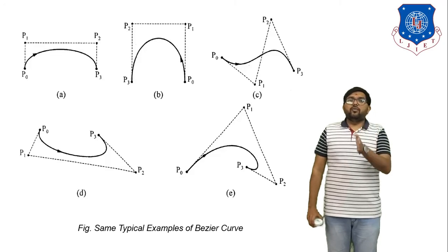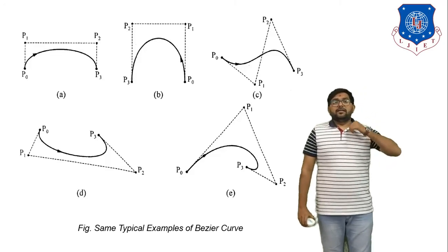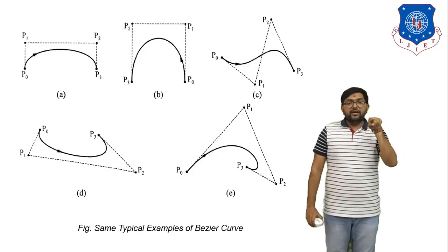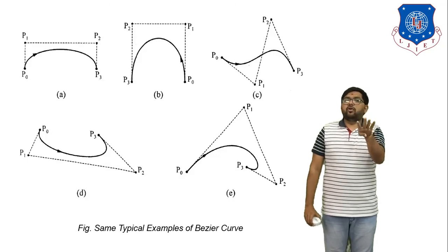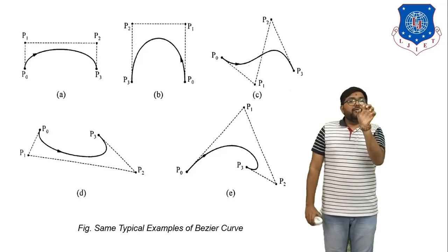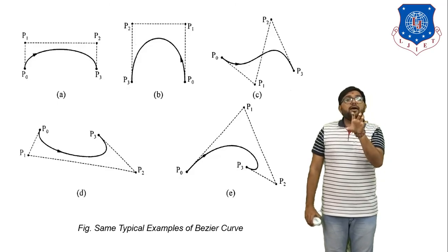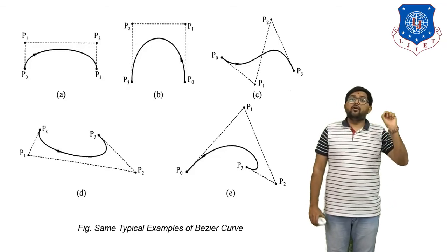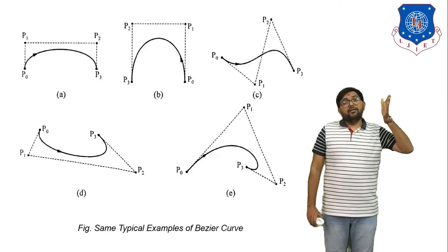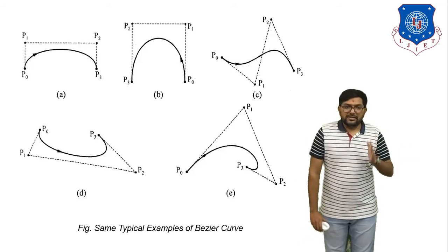All five figures use the same four control points, but the shape of each Bezier curve is different — because the position of the control points defines the shape of the curve. There is no fixed shape for any Bezier curve; even with the same input data, different orderings or positions yield different shapes.